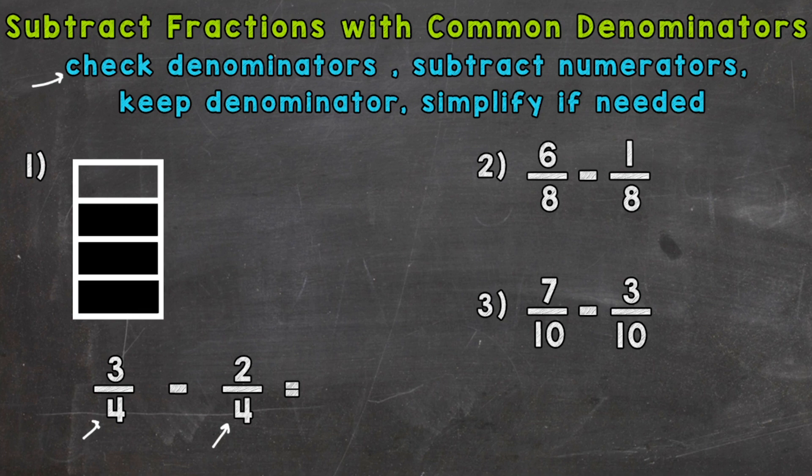We can do three minus two is one. Then we keep our denominator four, so four. Our answer is one-fourth. Always check to see if you can simplify, but in this case one-fourth is in simplest form. The only common factor between one and four is one, so this is our answer.